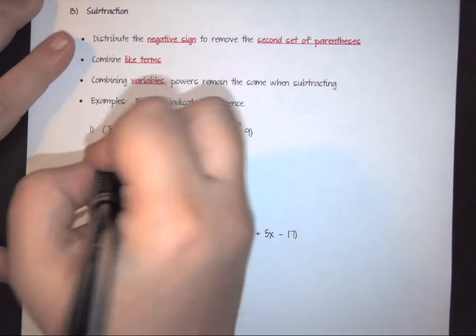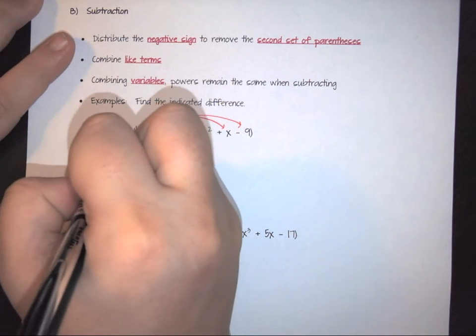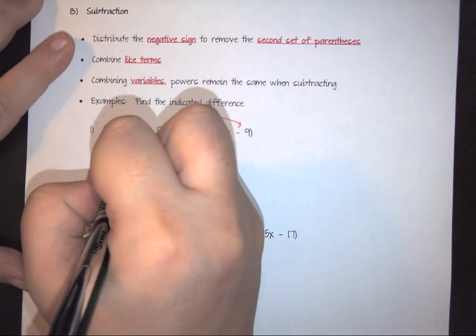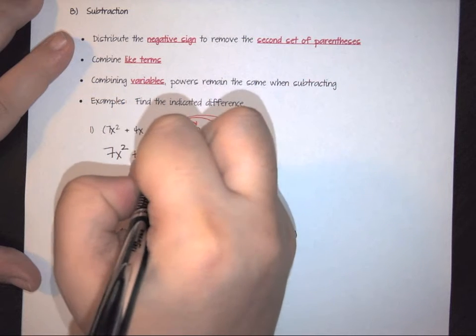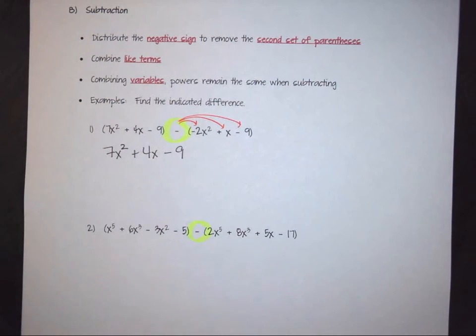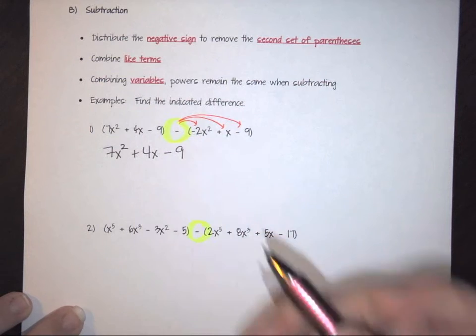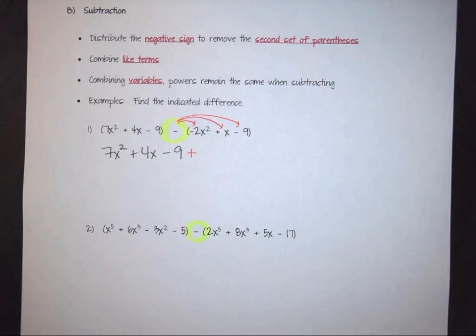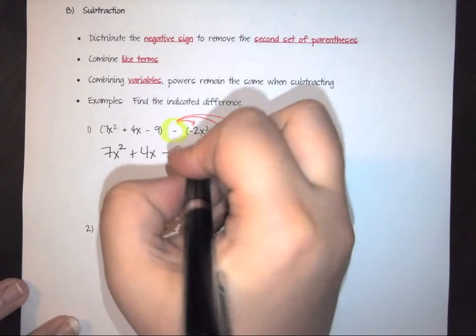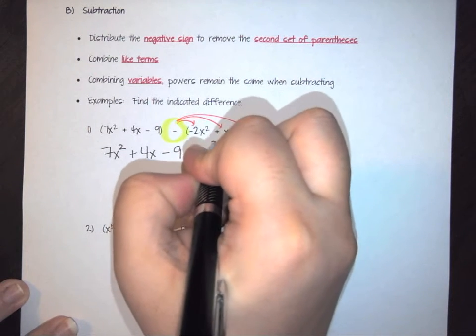So the front stays the same. So this becomes a negative x squared plus a 4x minus 9. But then I have negative times negative. So that's going to change. This becomes a positive. And it's still going to be a 2x squared.